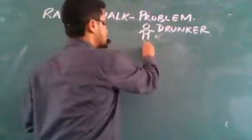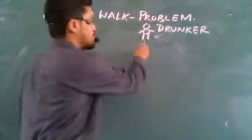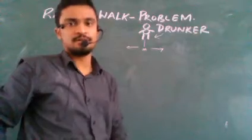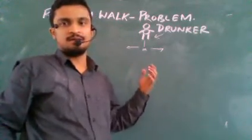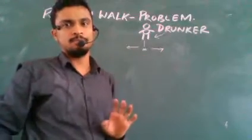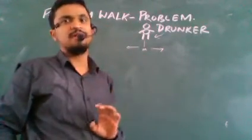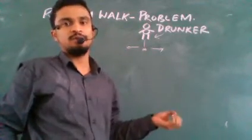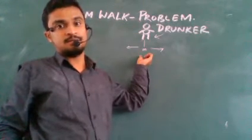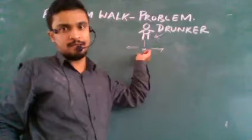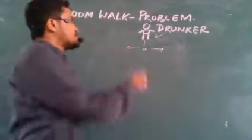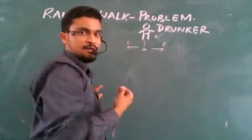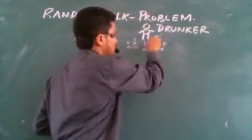We are interested in this particular problem: there is a drunker at position m, and it can move either to the left side or the right side. I have made some simple calculations to conclude very simply what is the possibility of the drunker's position. It can move in either direction, and the probability is one-half in both cases — half for left and half for right.